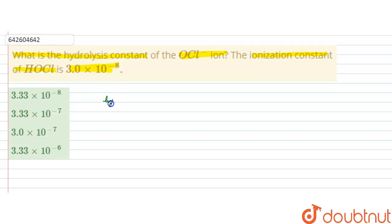So, hydrolysis constant for an acid, for an acidic solution, that is equal to KW by KA.